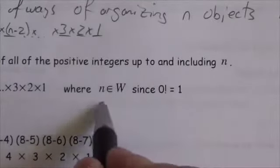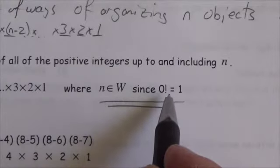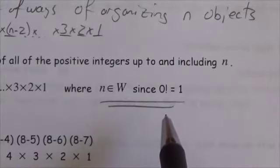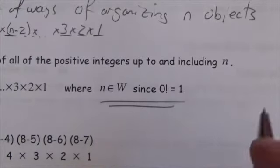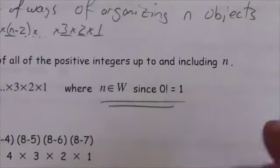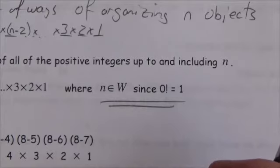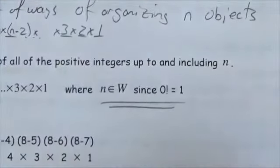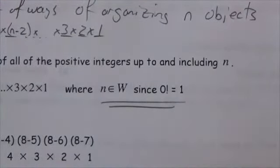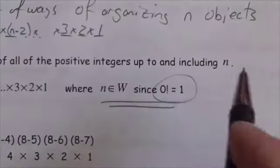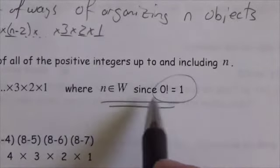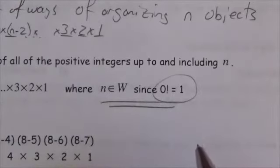With one addition: zero factorial equals one. It's a somewhat strange idea — if you've got no objects, there is one way of organizing them. Think about it: how many ways can I organize all of the elephants in my hand? There's only one way — there's nothing to do. In a more algebraic sense, you'll see why this has to be true when we get there.